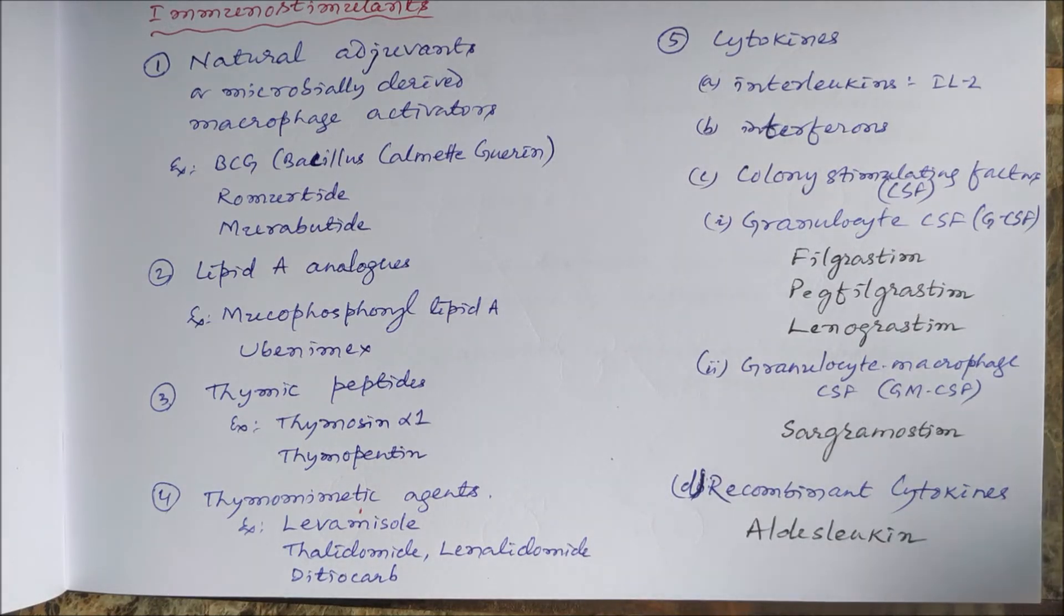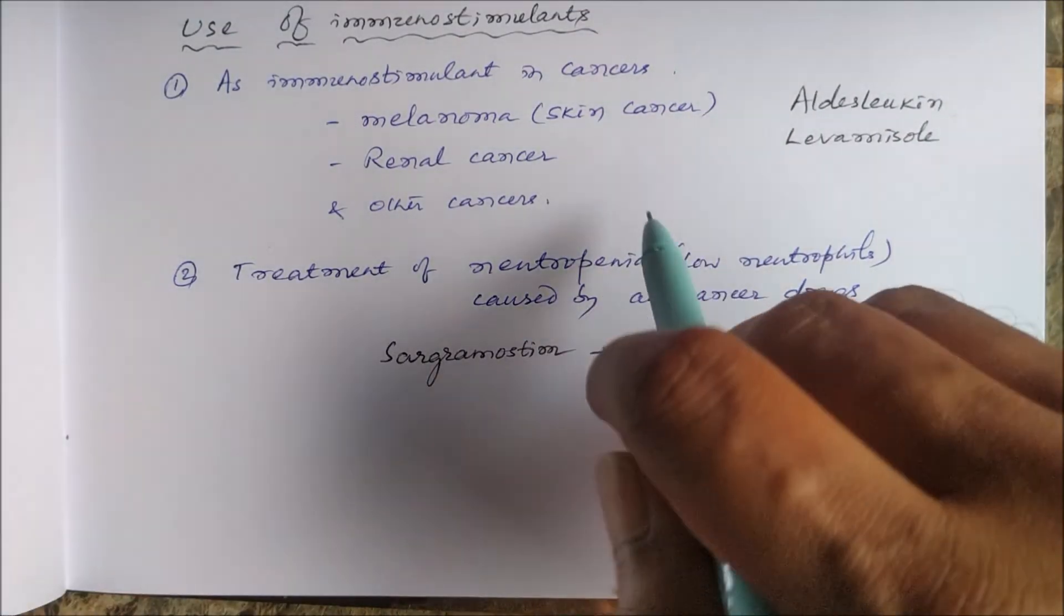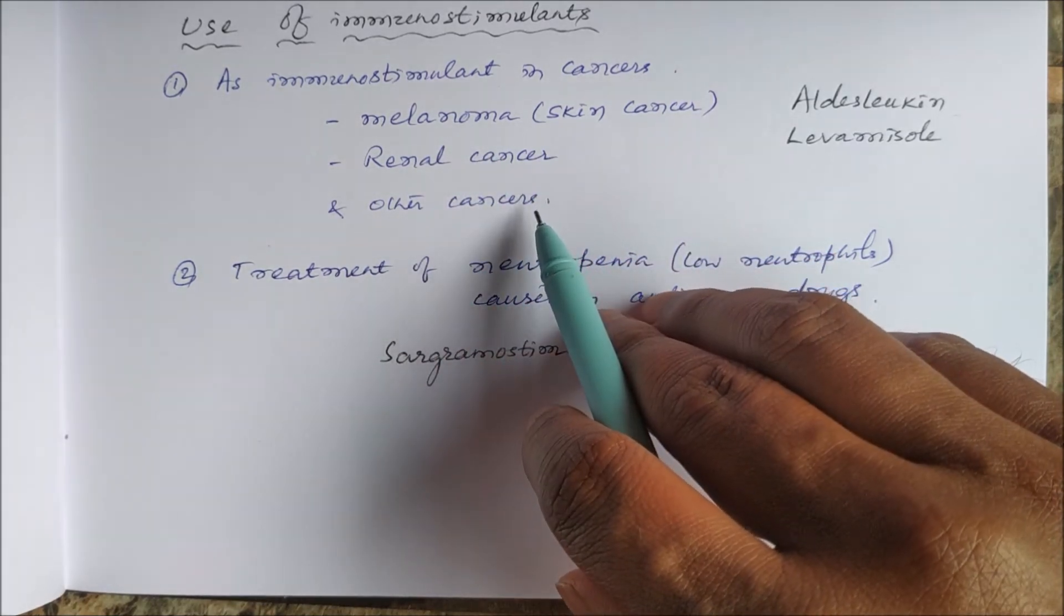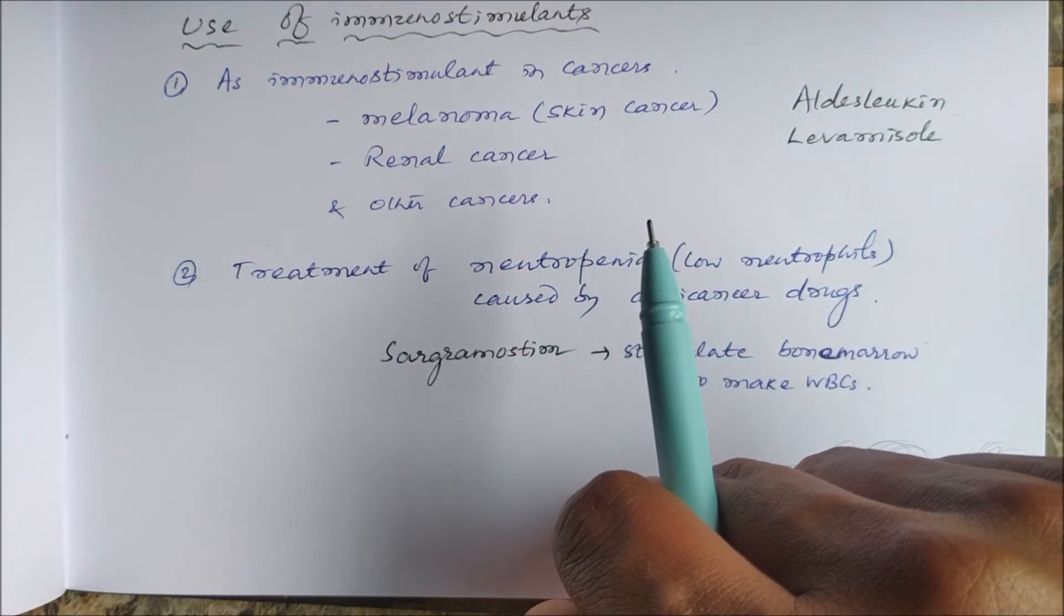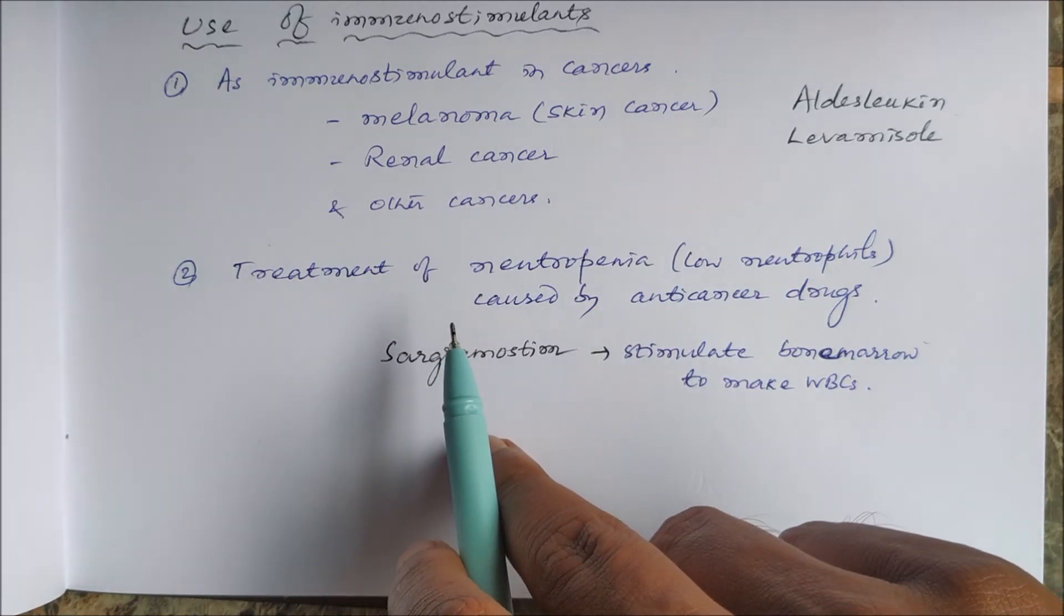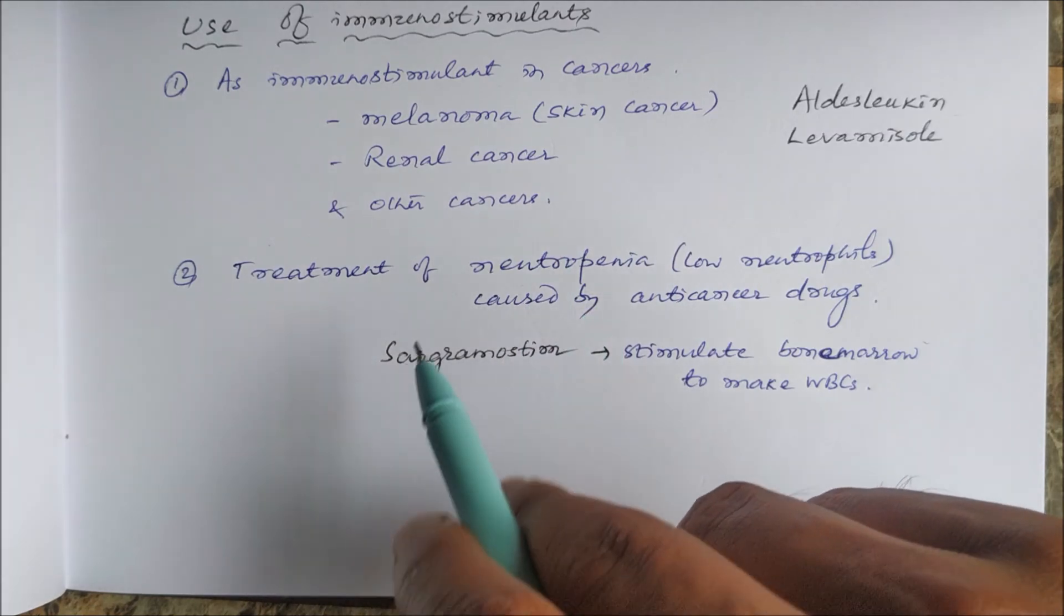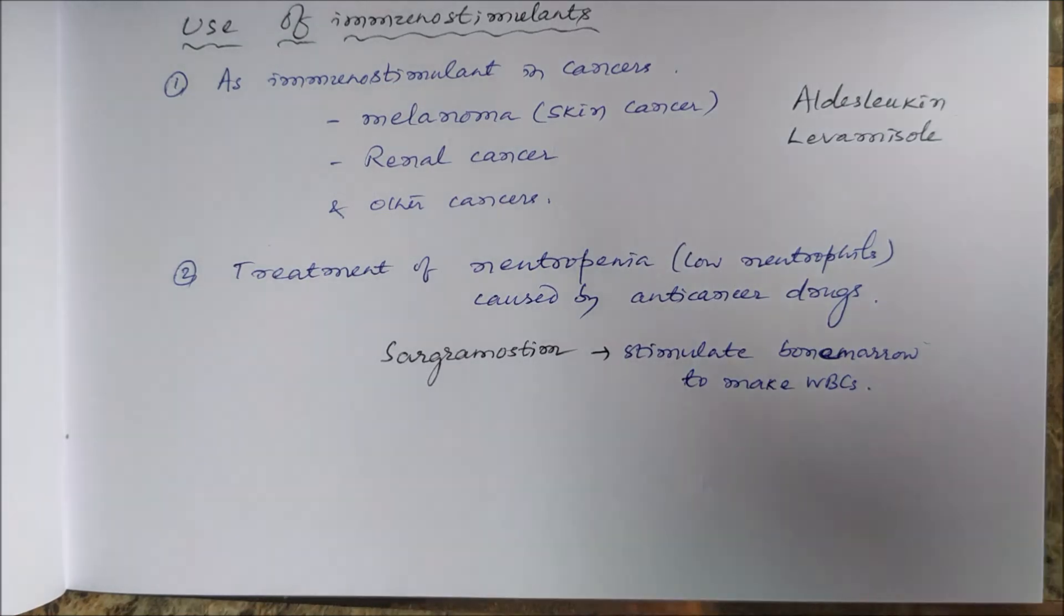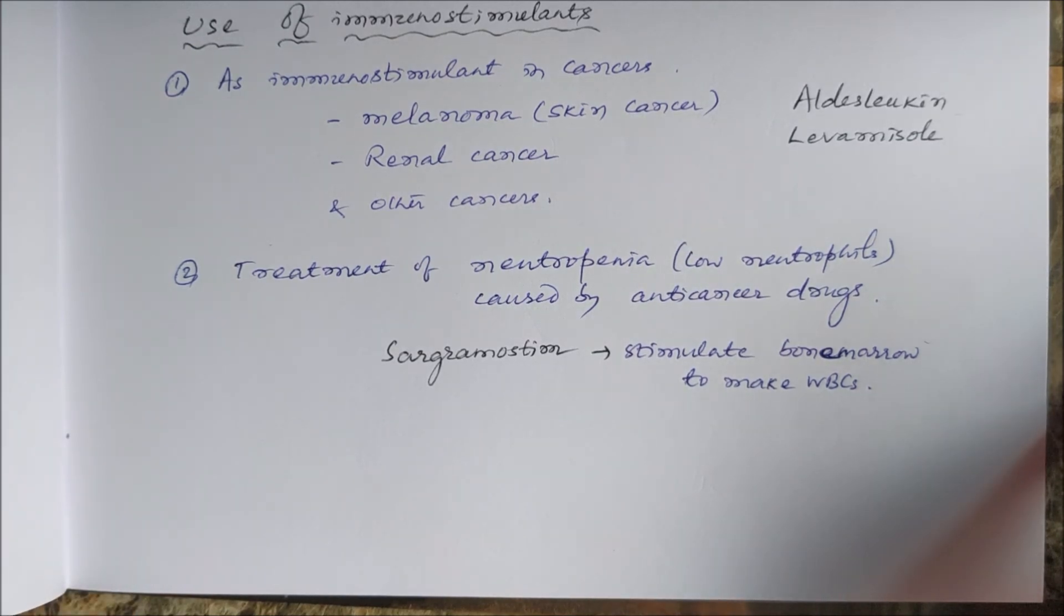Where are they used? They can be used in cancers: skin cancer, melanoma, renal cancer, and any other cancer as an immunostimulant. For example, levamisole and aldesleukin are drugs of choice. They can be used for treatment of neutropenia, which is low neutrophils caused by anti-cancer drugs. Drug of choice like sargramostim is used to stimulate the bone marrow to make the white blood cells including neutrophils. This is all about immunostimulants, thank you.